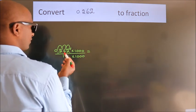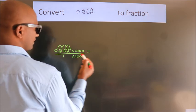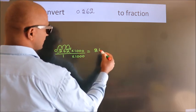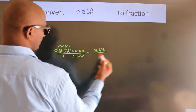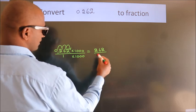0.262 times 1000 equals 262. 1 times 1000 equals 1000.